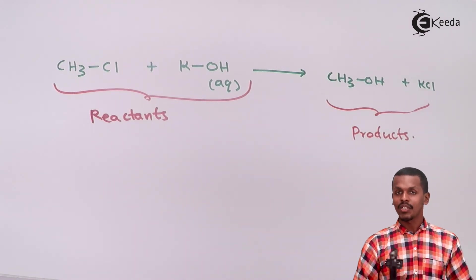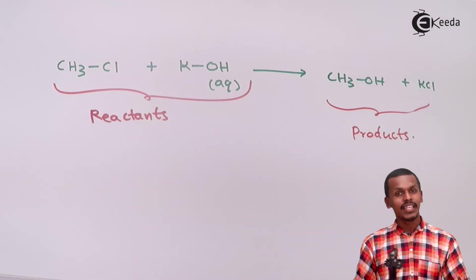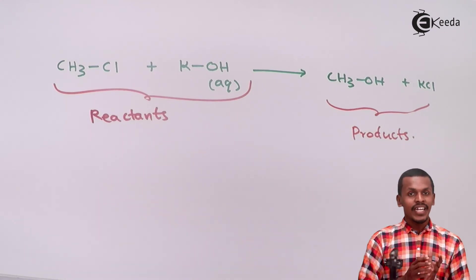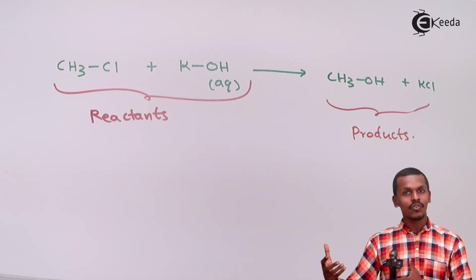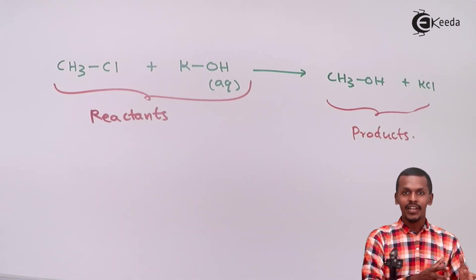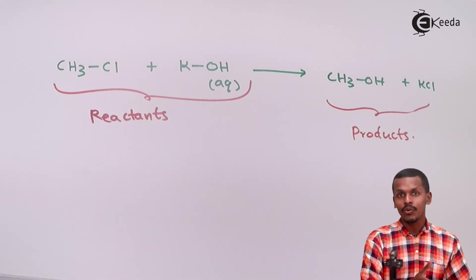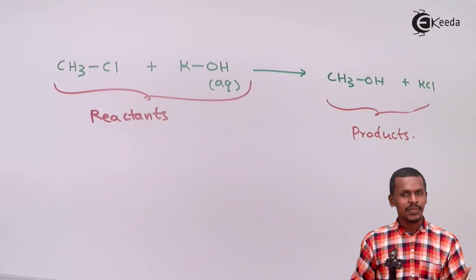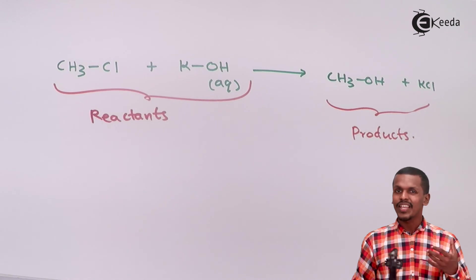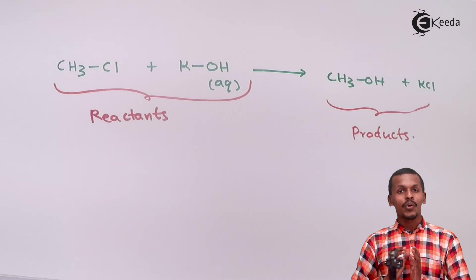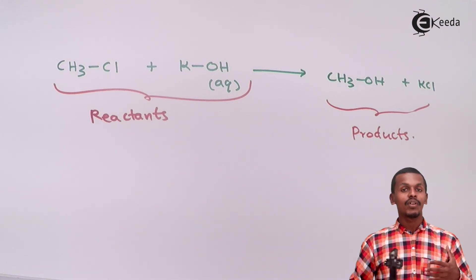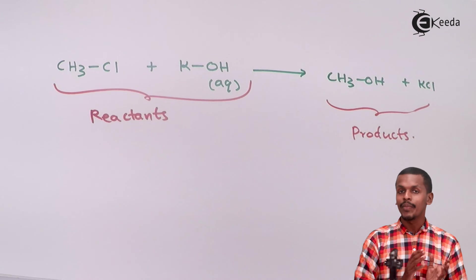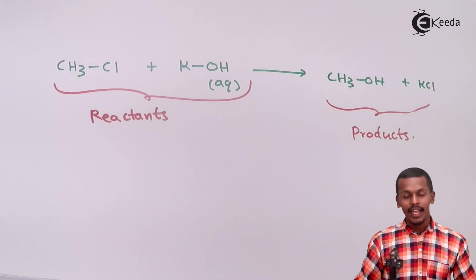Reactants and products are related to a chemical reaction only. Suppose we have a compound like methanol already with us — if no chemical transformation has taken place through a chemical reaction, we cannot call it a product; it could be utilized as a reactant. So the concepts of product and reactant are always related to a chemical reaction.